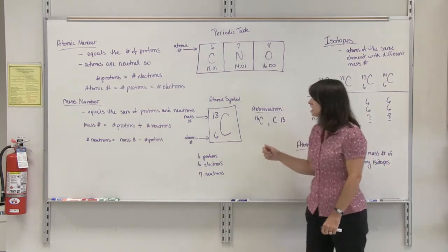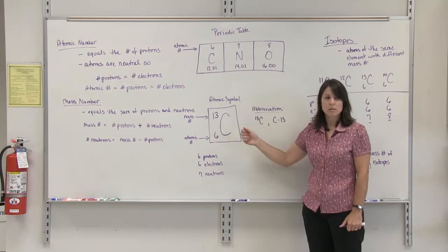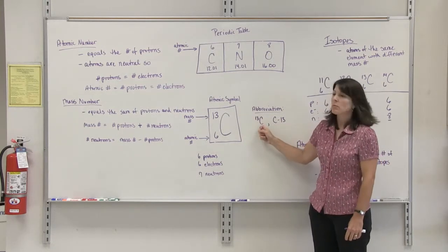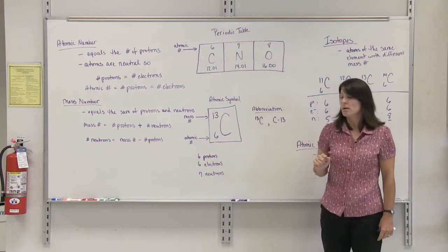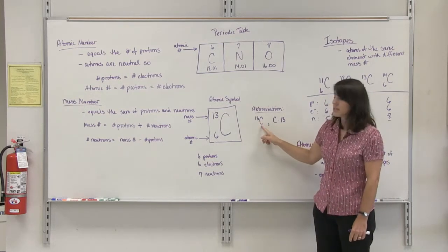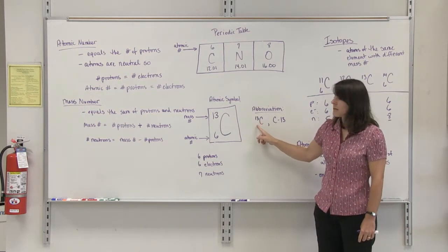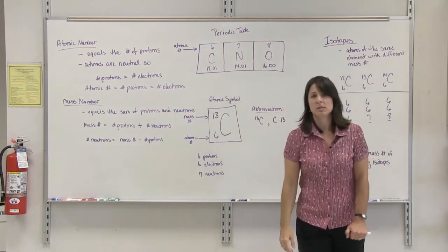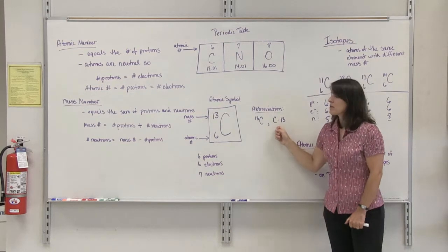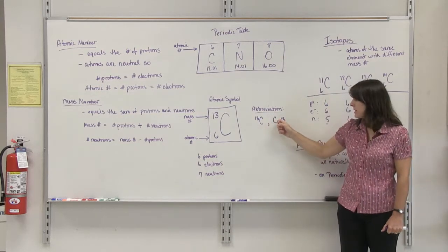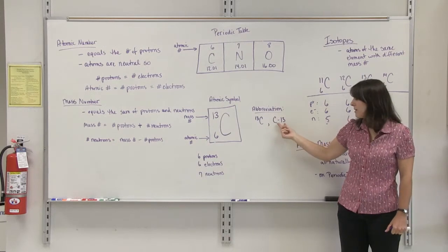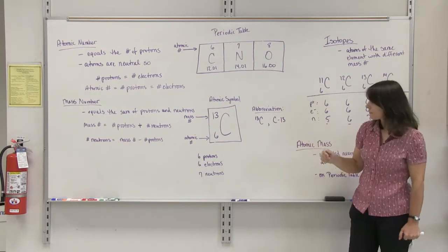Another way you might see these atomic symbols represented as abbreviated forms: you may see them written with only the mass number, because if it is ¹³C, then the atomic number has to be 6 because carbon always has atomic number 6. You may also see it written as C-13. If you see a symbol of an element followed by a number, that number is always the mass number.